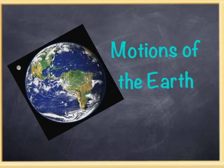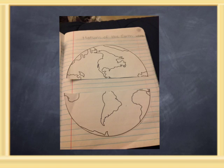The last foldable we talked about was rotation and revolution. In this foldable, we're going to talk about how rotation and revolution affect the different motions of our Earth. We're going to go through the two different motions the Earth goes through. Those two different motions are rotation and revolution.